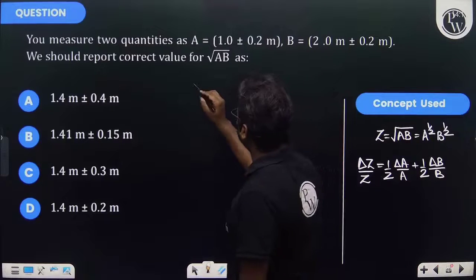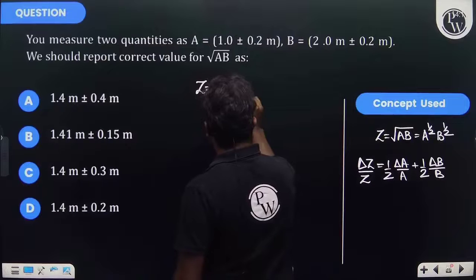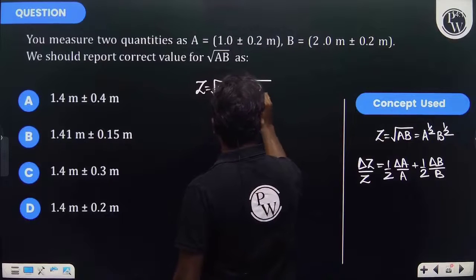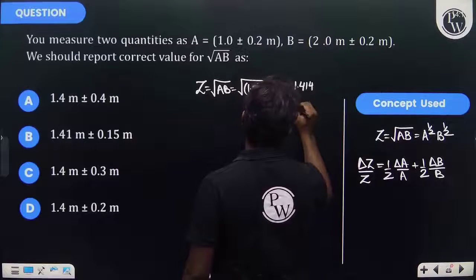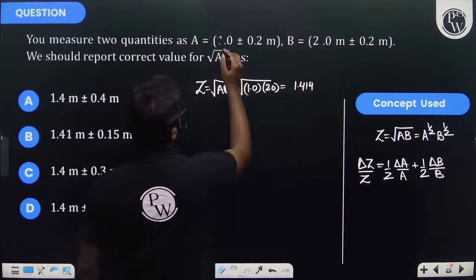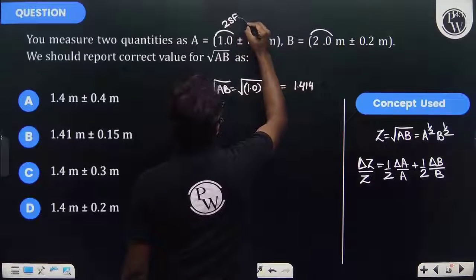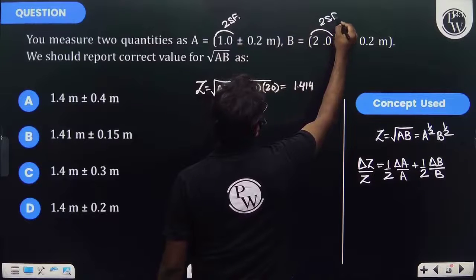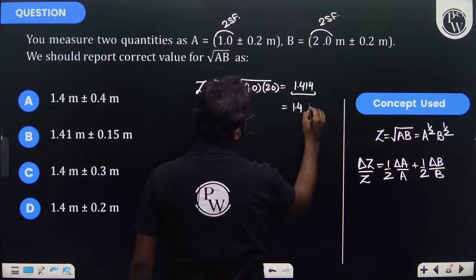Now let's find the true value first. Z = √(AB) = √(1.0 × 2.0) = 1.414, which is √2. But the numbers being multiplied have two significant figures, so the answer should be reported to two significant figures: 1.4 is the true value.